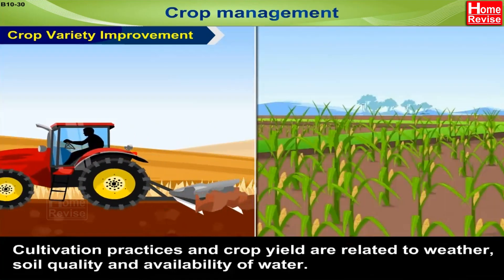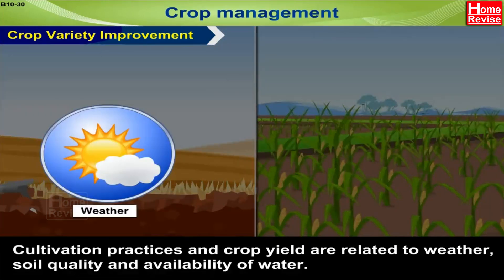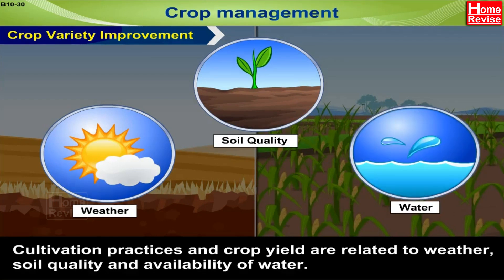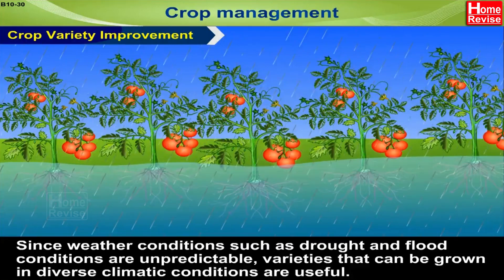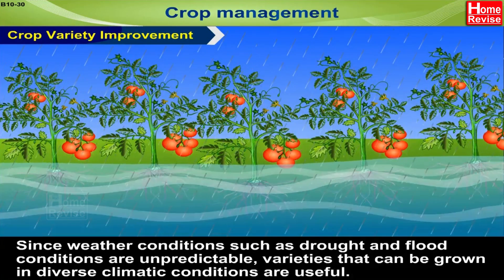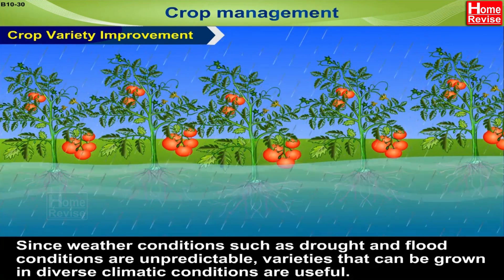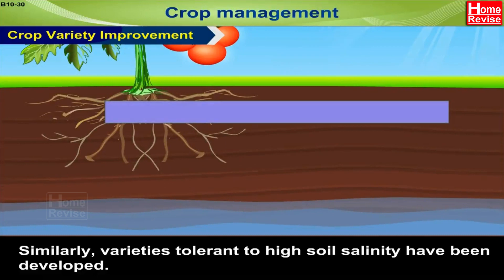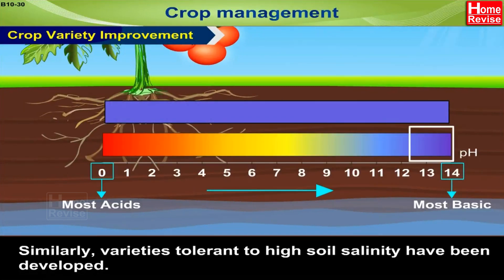Cultivation practices and crop yield are related to weather, soil quality, and availability of water. Since weather conditions such as drought and flood are unpredictable, varieties that can be grown in diverse climatic conditions are useful. Similarly, varieties tolerant to high soil salinity have been developed.